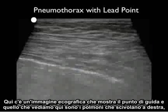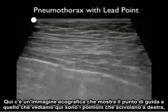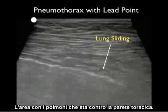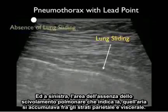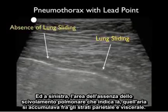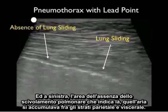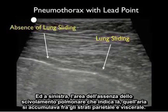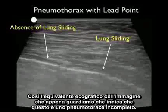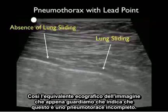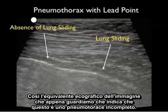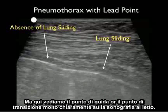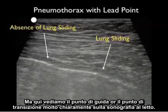Here's an ultrasound image showing the lead point. We see the lung sliding to the right — the area where the lung touches up against the chest wall — and to the left, the area of absence of lung sliding, telling you that air has collected between the visceral and parietal layers. This is the ultrasound equivalent telling you that this is an incomplete pneumothorax, and here we see that lead point, or transition point, very well on bedside sonography.